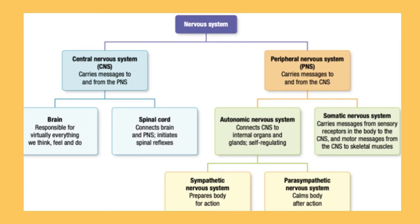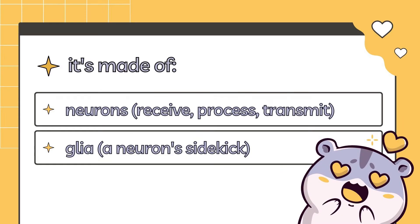This graphic shows the branches of the nervous system. The building blocks of the nervous system are neurons and glia. Neurons are individual nerve cells that receive, process and/or transmit information to other cells. Glial cells support the neurons' functions by making myelin and cleaning debris.